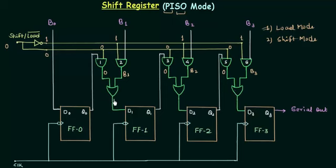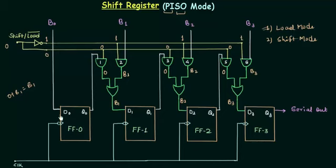The OR gate receives 0 and B1, and 0 OR B1 simply equals B1. So we have B1 as the input to flip-flop number 1, B2 as the input to flip-flop number 2, and B3 as the input to flip-flop number 3. We can see that B0 is stored in flip-flop 0, B1 in flip-flop 1, B2 in flip-flop 2, and B3 in flip-flop 3. The load mode is complete and data is now stored in the flip-flops.